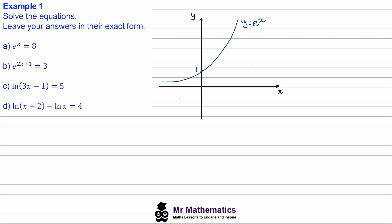Let's get a graph of e to the power of x. We know the intercept is at y equals 1 and we know we've got a horizontal asymptote at y equals 0. To solve equations involving e to the x, we need to know the inverse operation of e to the x. We should know that inverse functions are a reflection of the original function in the line y equals x. So if we reflect e to the x in this line, then we'll get the inverse of this function.